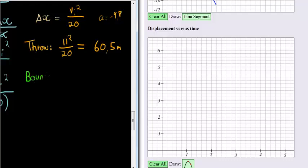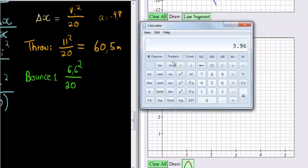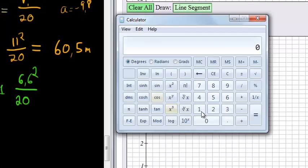What about bounce 1? Bounce 1, we went up at 6.6 meters per second. That was the initial velocity. That's going to be squared divided by 20. Now 6.6 squared, I don't know in my head. Maybe you do. You're a genius. 6.6 squared is 43.56 divided by 20 equals 2.17. So that will be 2.2.